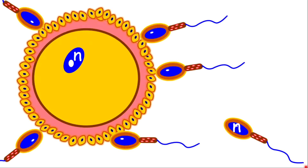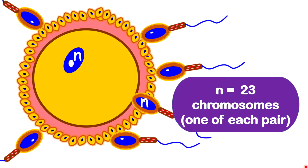Now, let us zoom into the actual fertilization process. For fertilization to take place, the egg cell will be surrounded by many sperm cells. Each sperm cell will try to digest their way through the membrane of the egg cell. However, the egg cell will only allow one sperm cell to digest its way through. To burrow through the membrane of the egg cell, the sperm cell has a structure in its head known as the acrosome. The acrosome contains digestive enzymes, which are needed to break down part of the wall of the egg cell so that the sperm cell can enter.